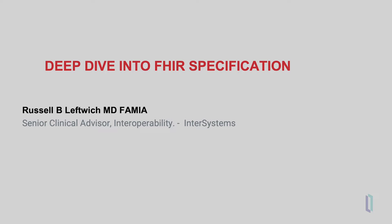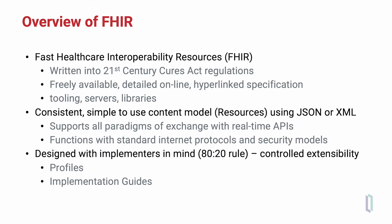We are going to take a close look at the FHIR specification, which is freely available and downloadable from the HL7 FHIR website. First, an overview of important considerations about the FHIR specification. The FAST Healthcare Interoperability Resources standard is written into the 21st Century Cures Act regulations for the U.S. It is freely available and downloadable, and it is hyperlinked in the specification to make navigation easier. There are extensive libraries and tooling available for the FHIR specification.